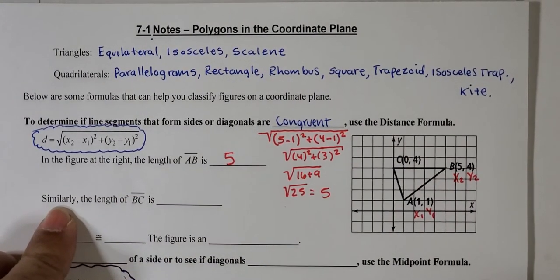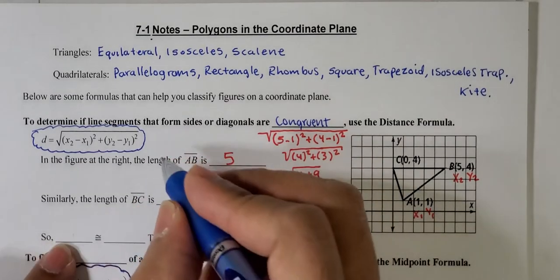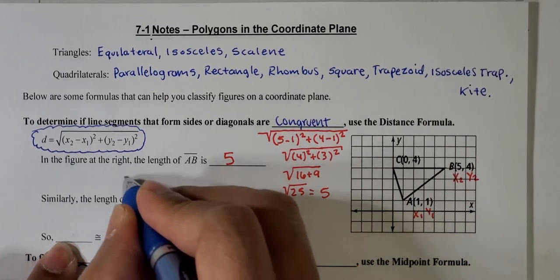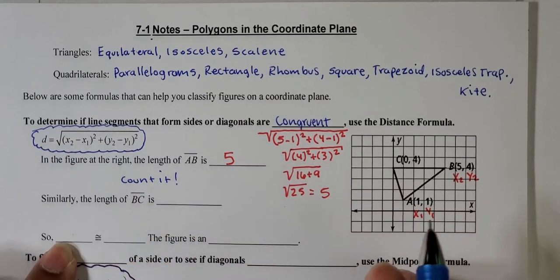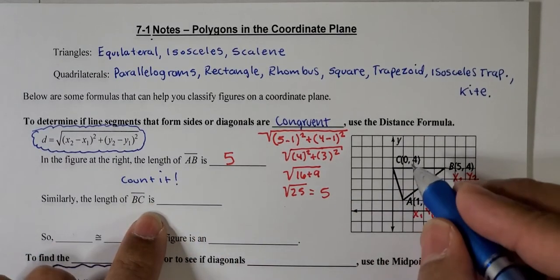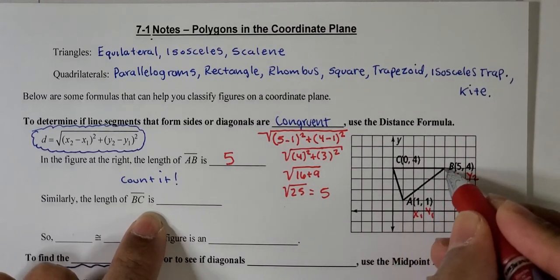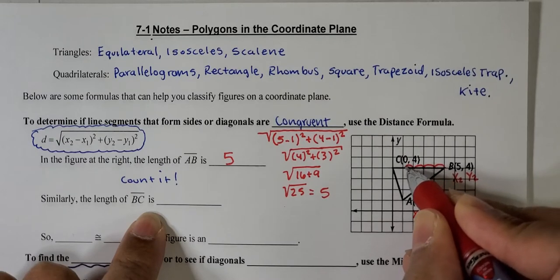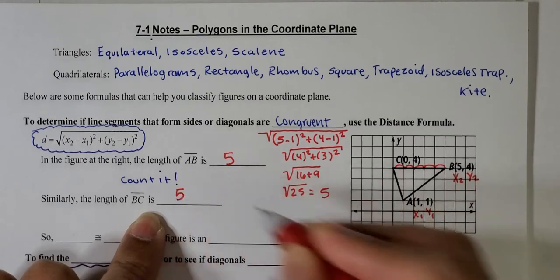Similarly, we can find the length of BC, but the difference here with BC is that we can actually count. If you can avoid using the formula, by all means do it. So just count the distance from point C to point B, or B to C, it doesn't matter which way you say it, so this is 1, 2, 3, 4, 5. So this is also 5 units long.